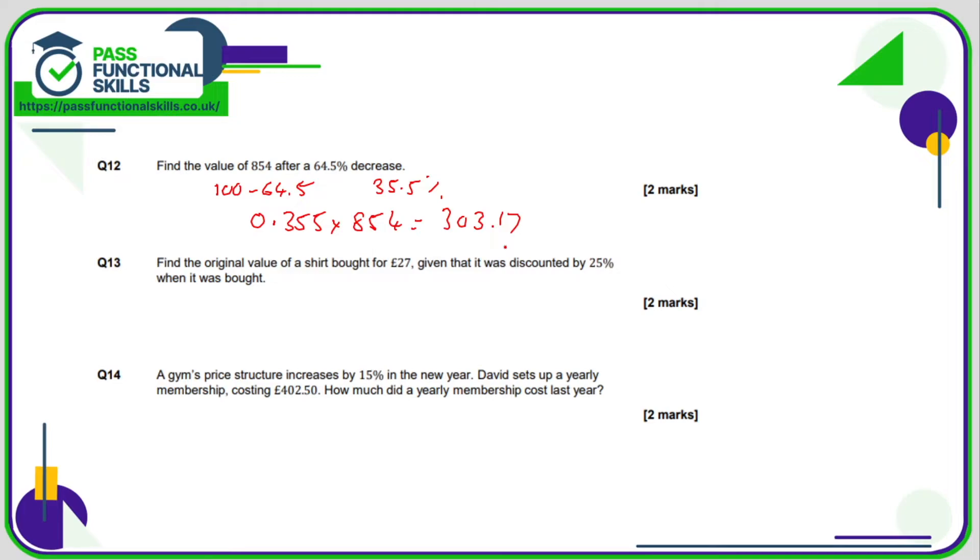So question number 13, so find the original value of a shirt bought for £27, given that it was discounted by 25% when it was bought. So what we know is that if it's been reduced by 25%, then 75% equals £27, or £27 equals 75%. So if 75% equals £27, what is the full amount, which is the 100% amount?